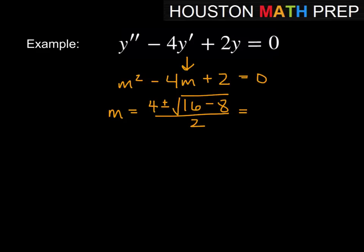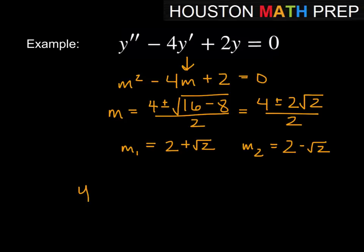And so we'll go ahead and have 4 ± 2√2, over 2. Which gives us m₁ = 2 + √2, m₂ = 2 - √2. So these are still real numbers, so they fall into our pattern here. So y = c₁e^((2+√2)x) + c₂e^((2-√2)x).